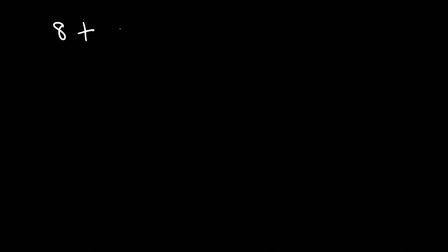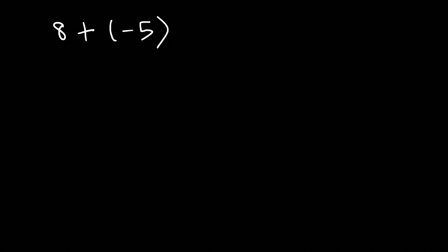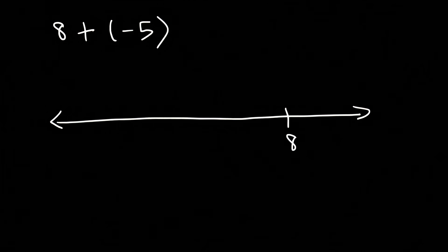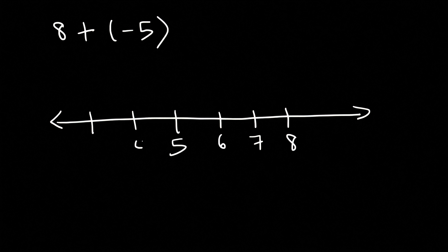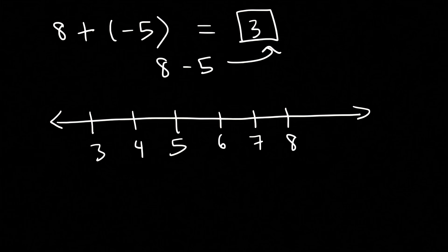Here's another example: what is 8 plus negative 5? By the way, 8 plus negative 5 is equivalent to 8 minus 5. If you wish to add a negative number, start with the first number 8. Adding a negative number means you travel towards the left: 1, 2, 3, 4, 5 — landing on 7, 6, 5, 4, 3. So 8 plus negative 5 is positive 3, the same as 8 minus 5.